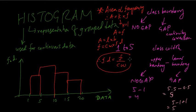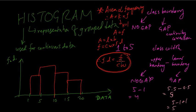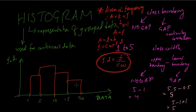This formula is very important. If you want to draw a histogram, you need frequency density. If you know the frequency and the class width, you can easily find the frequency density, which is the height of the histogram.